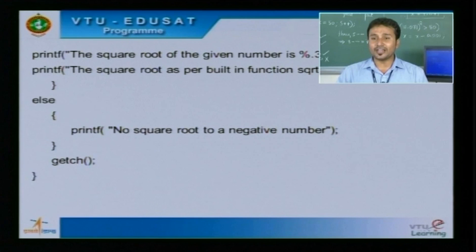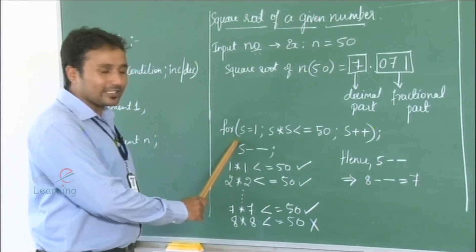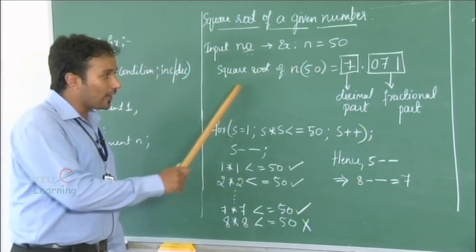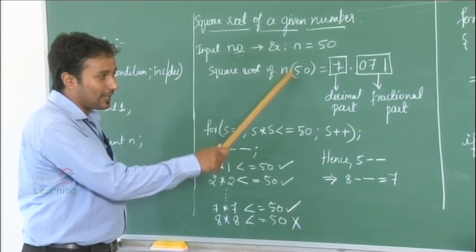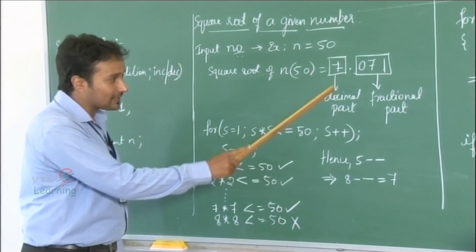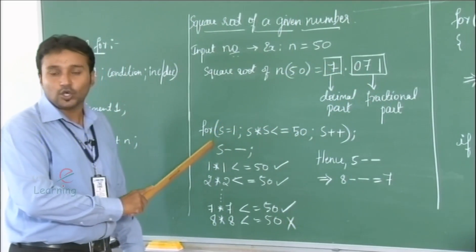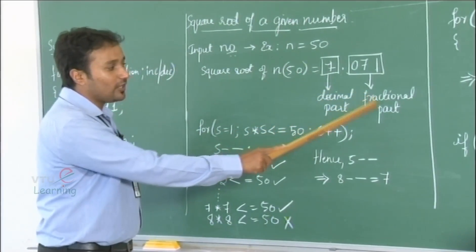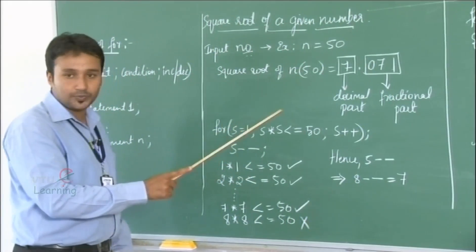Finally we have getch and the closing of the program. Now let us look into the tracing of this program. The square root of n equals 50 consists of two parts: the decimal part and the fractional part. We need to compute two iterations to get each part, hence we have two for loops.